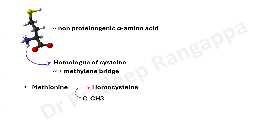To understand hyperhomocysteinemia, we need clarity on its metabolic pathway. Methionine is converted to homocysteine with the loss of a C-methyl group. The crux of the issue is that this homocysteine in the body should be re-converted to methionine or converted to cysteine, and that happens in the presence of vitamins. Methionine converts to homocysteine, and homocysteine gets re-converted in the presence of adequate vitamin B6, B9, or B12 — that is, pyridoxine, folic acid, and B12.